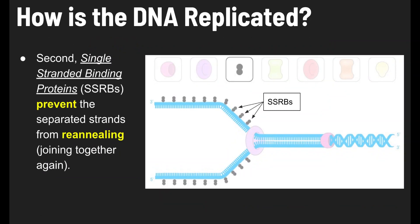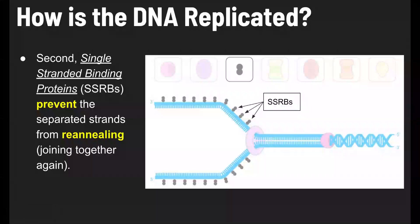In step two, single-stranded binding proteins — abbreviated as SSBPs — prevent the separated strands from joining together again, or re-annealing. They essentially hold the two strands apart.